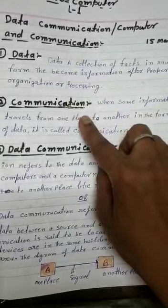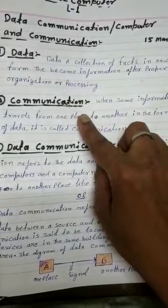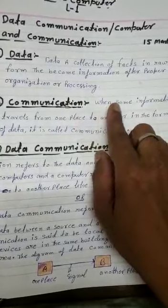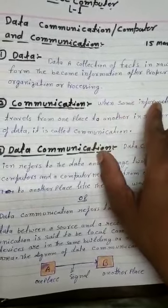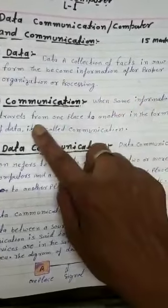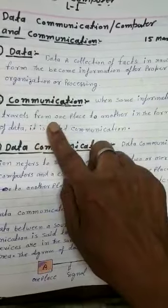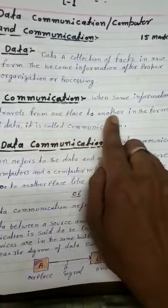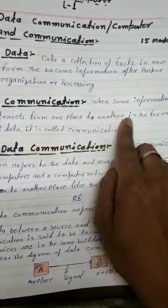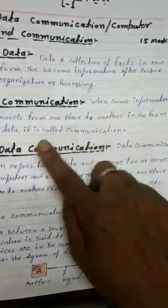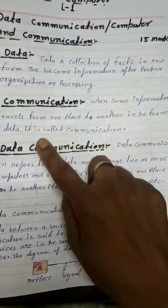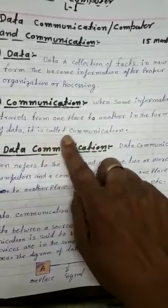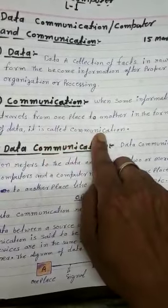The second is communication. When some information travels from one place to another place in the form of data, it is called communication.